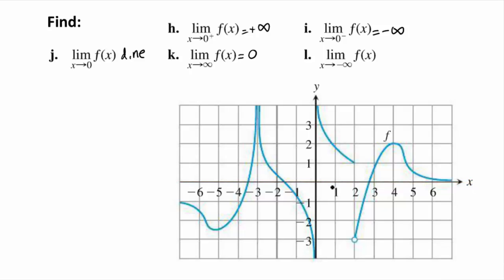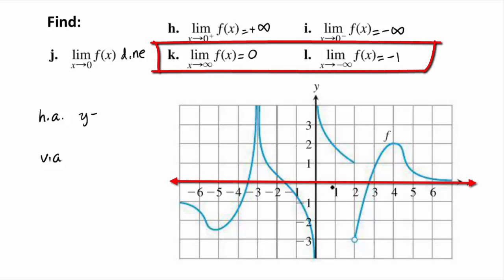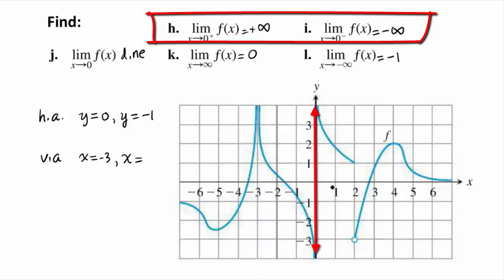It behaves differently when x is approaching negative infinity. We see that as x approaches negative infinity, the y values taper off at the horizontal line y equal to negative 1. From the graph we can see horizontal asymptotes at y equal to 0 and y equal to negative 1, and vertical asymptotes at x equal to negative 3 and x equal to 0.